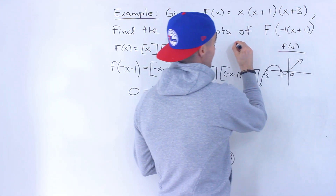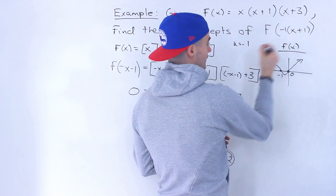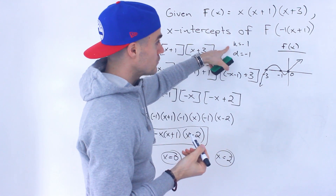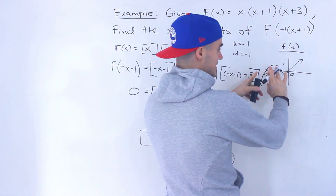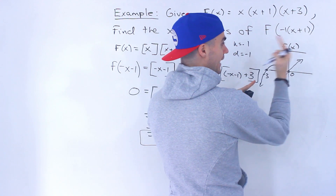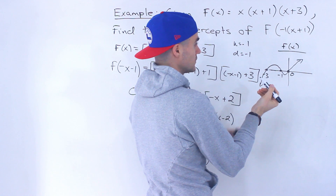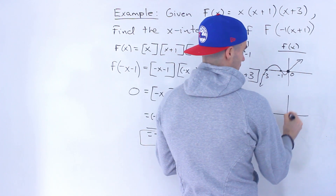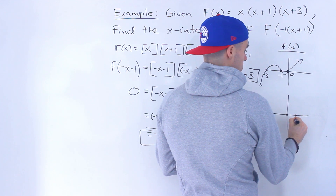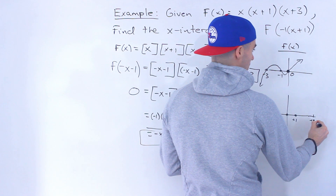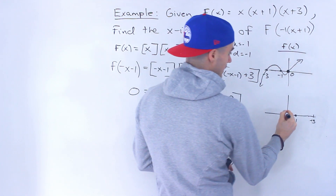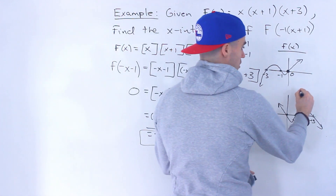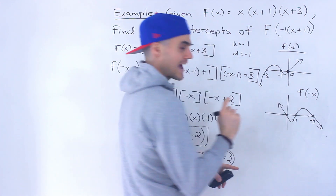The k value is negative 1 and the d value is also negative 1 — remember, it's the opposite sign. A k value of negative 1 means we reflect the function in the y-axis. So the x-intercept at 0 stays at 0, negative 1 maps to positive 1, and negative 3 maps to positive 3. This gives us f of negative x — we've just applied the k value of negative 1.